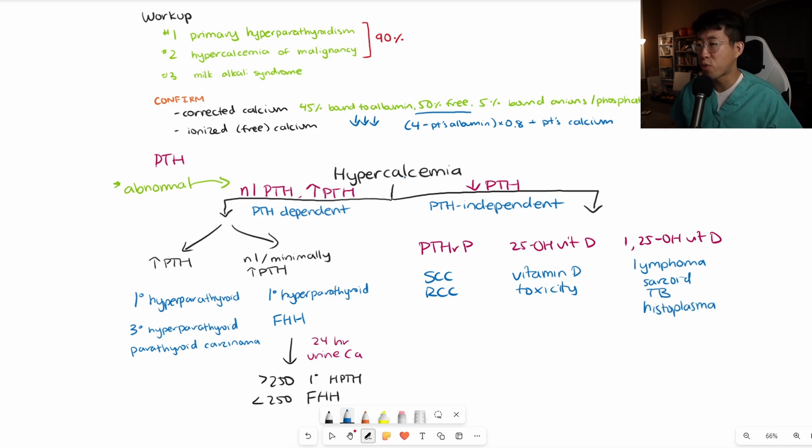That's the initial workup for the PTH-independent side of things. Get that PTH-RP, 25-hydroxyvitamin D, and the 1,25-hydroxyvitamin D. But if all of that workup is normal or negative, then you're going to go down a slightly different list of differentials.